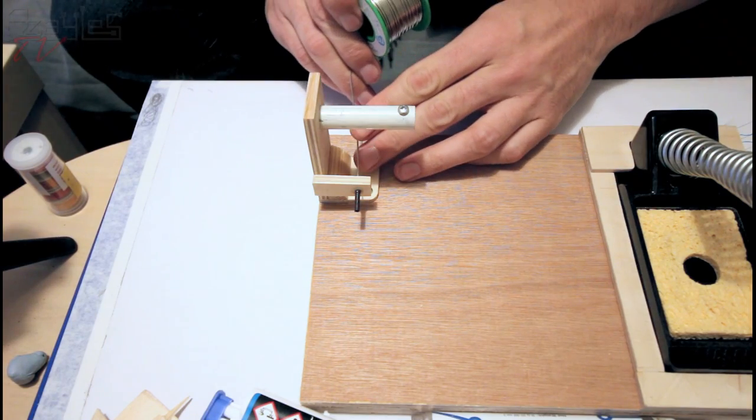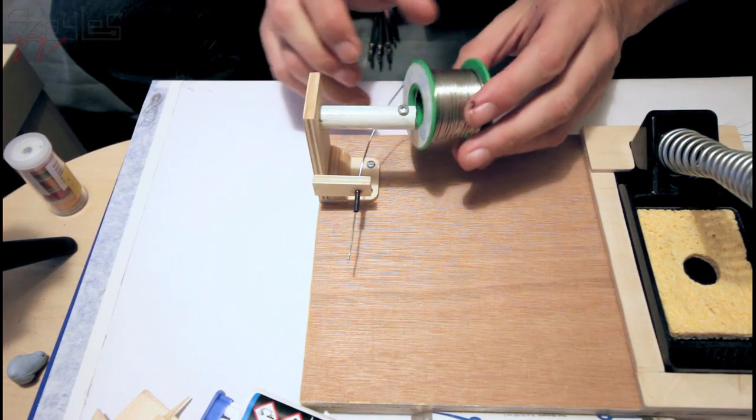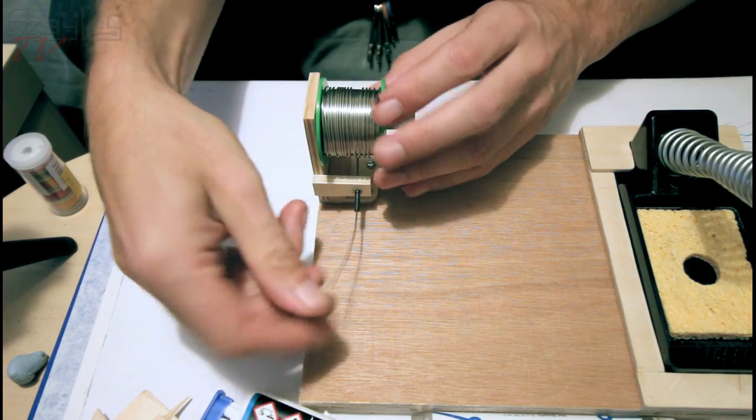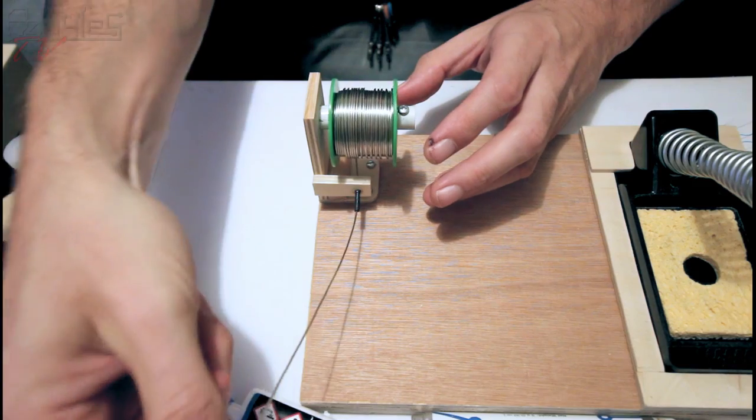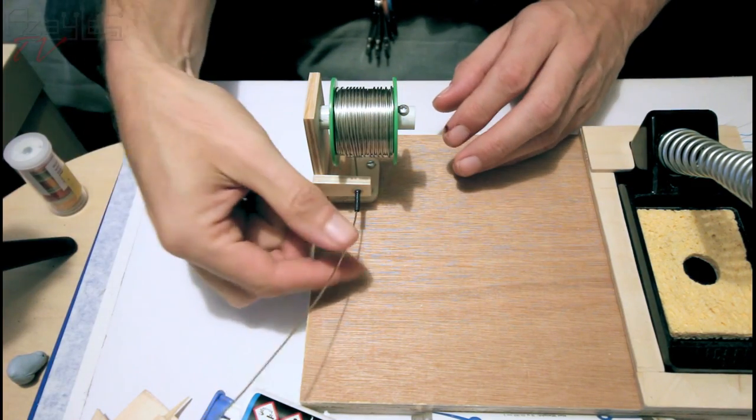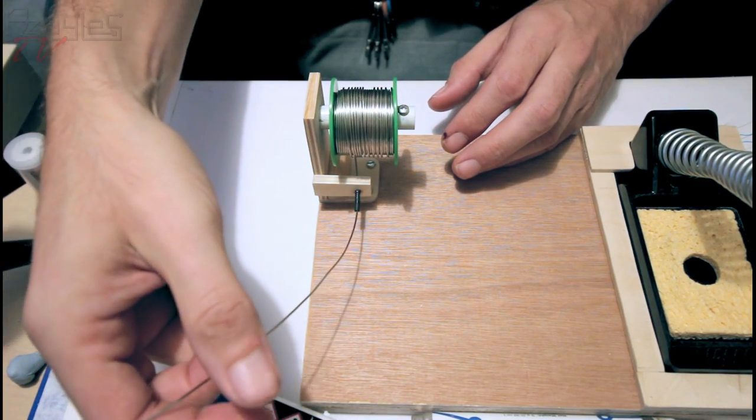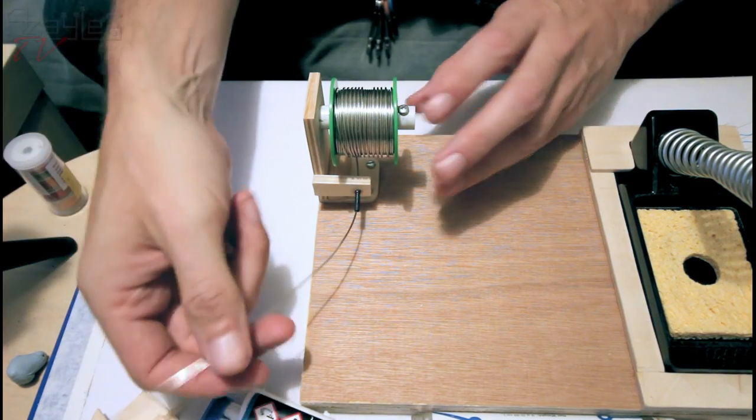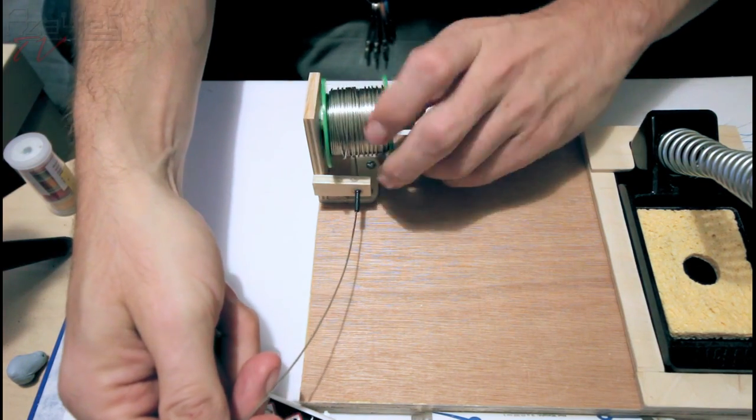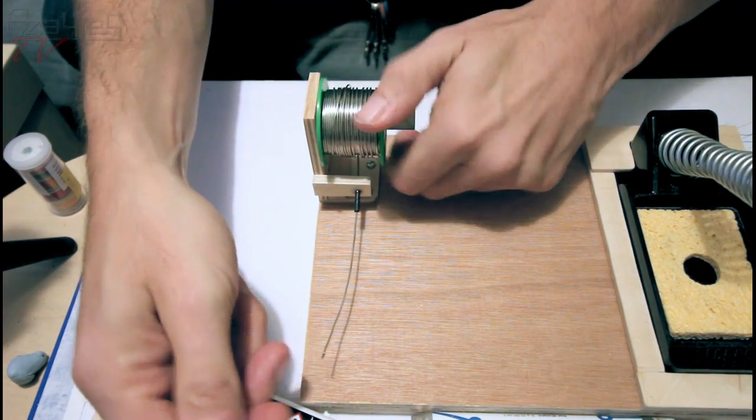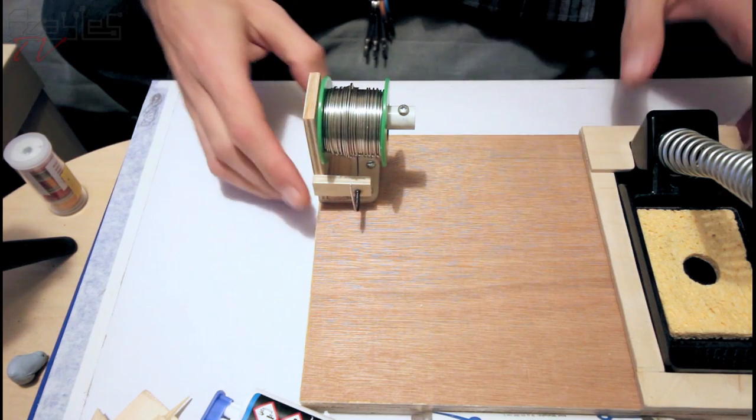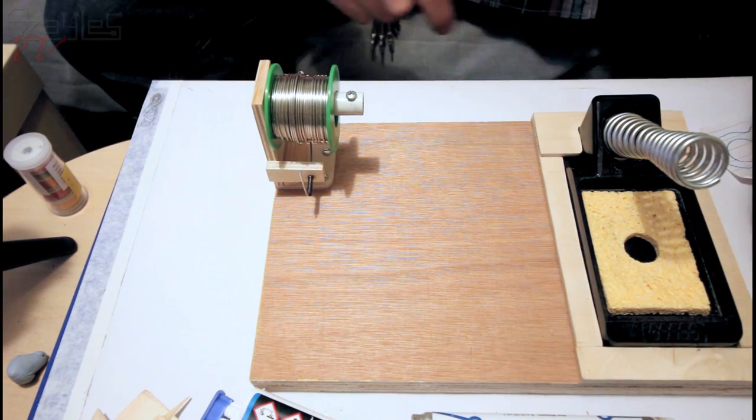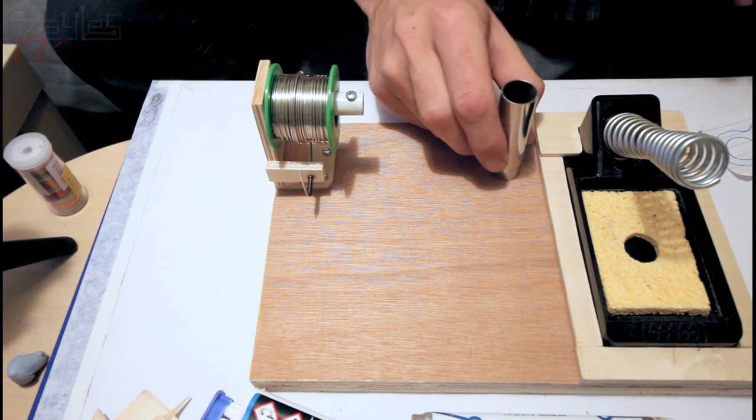So this goes through there. First of all it goes on there and then you just pull off what you need and this keeps it in tension. I can actually pull out quite a lot before it starts to fall down. Yeah, look at that. Anyway, so that works well. Right, the next thing will be to put the holder for the flux pen.